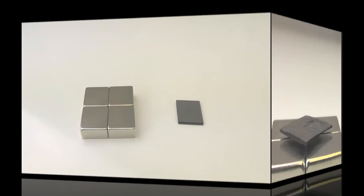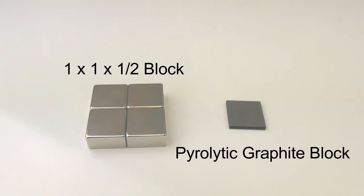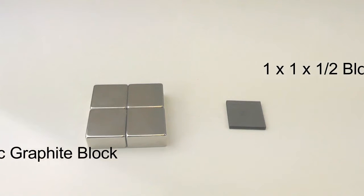Here's how we did it. We arrange four pieces of one-by-one-by-half-inch neodymium magnets into a square.